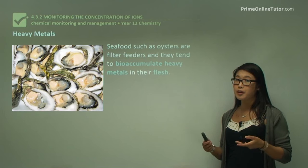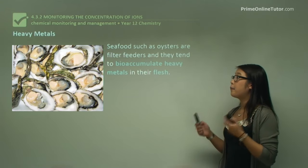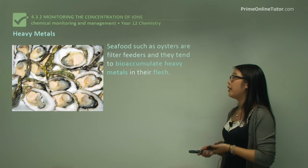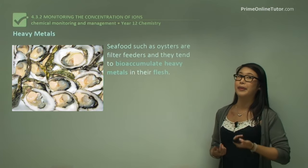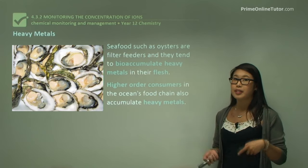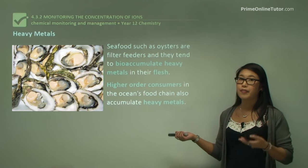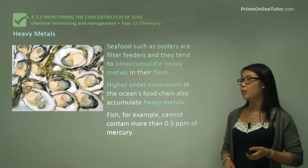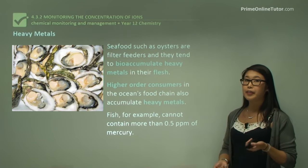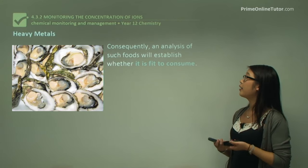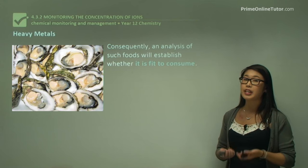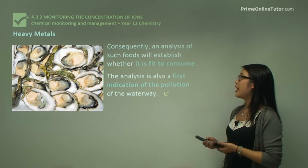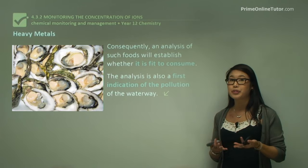Seafood such as oysters filter the water to get their food, but if there are a lot of heavy metal ions in the water, they can accumulate these in their body. If we eat them, then we consume all those heavy metal ions. Higher-order consumers such as us or larger fish will accumulate heavy metals if we're exposed and eat too much of them. For example, fish cannot contain more than 0.5 parts per million of mercury. By analyzing how much mercury is in the fish, we can decide whether it's okay to eat or not. This analysis is also a way for us to look at pollution in the waterways.